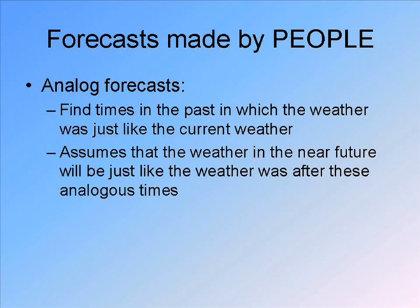For example, let's say today there's a big trough in the central United States and a big jet stream moving across the southeast United States, and a high pressure system centered over New England. You look through past times when there was a very similar analogous weather pattern and see what happened then. Maybe the high pressure system moved off the coast and the trough disappeared and the flow became more zonal. Not a bad forecast is that the same thing will happen again.